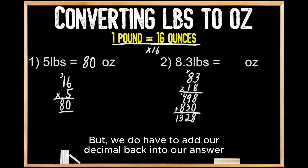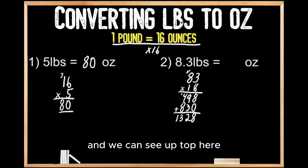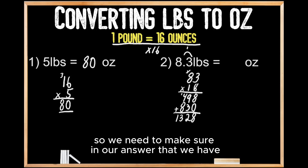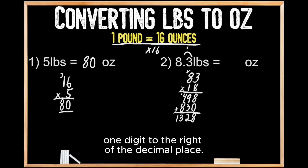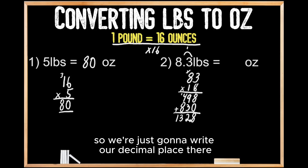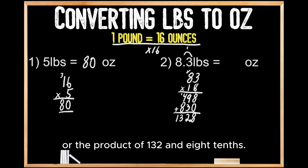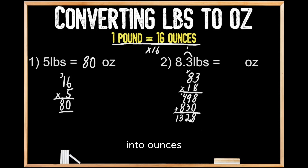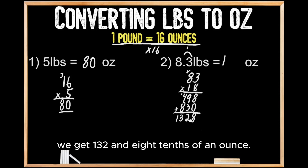But we do have to add our decimal back into our answer. We can see up top that we had one digit to the right of the decimal place, so we need to make sure our answer also has one digit to the right of the decimal place. It's going to lie between the two and the eight, giving us the product of 132.8. So when we convert eight and three-tenths of a pound into ounces, we get 132.8 ounces.